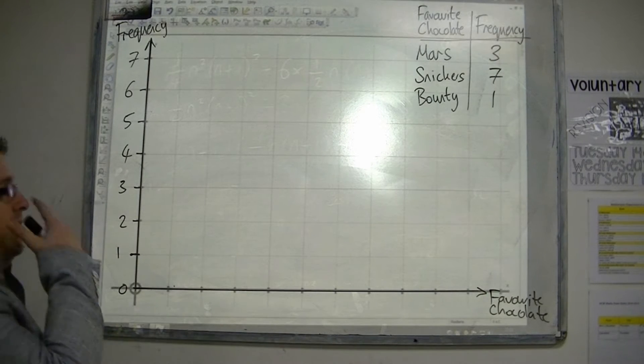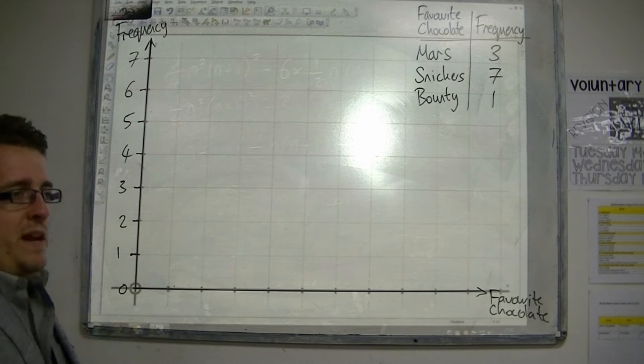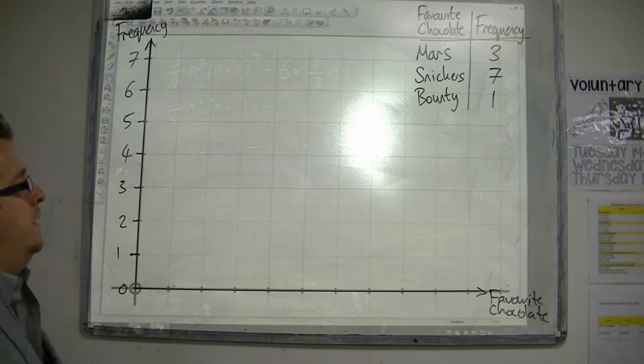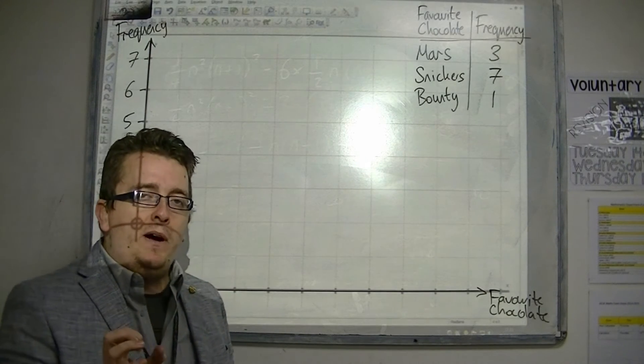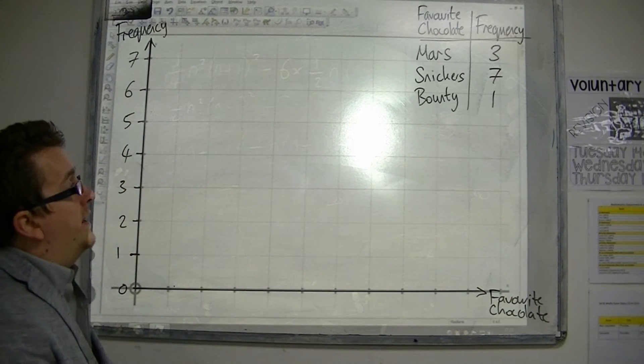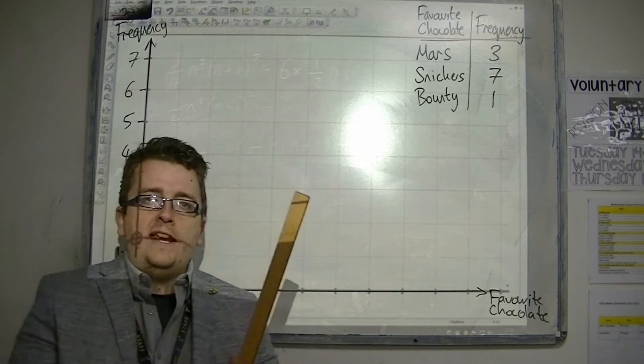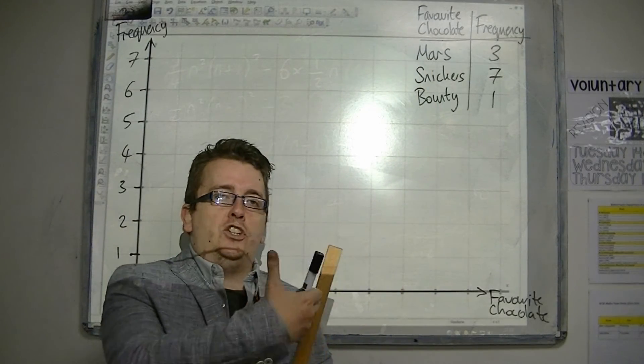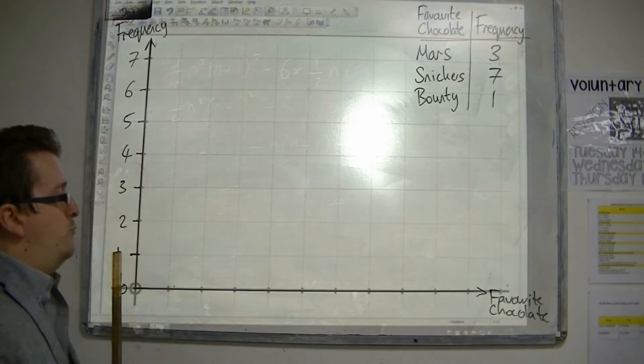Now, the actual bars themselves. The bars must be of the same width each time. And there must be gaps between the bars. Because we are working with discrete data, we are working in discrete, distinct groups. And so, the bars must also be distinct and separate.